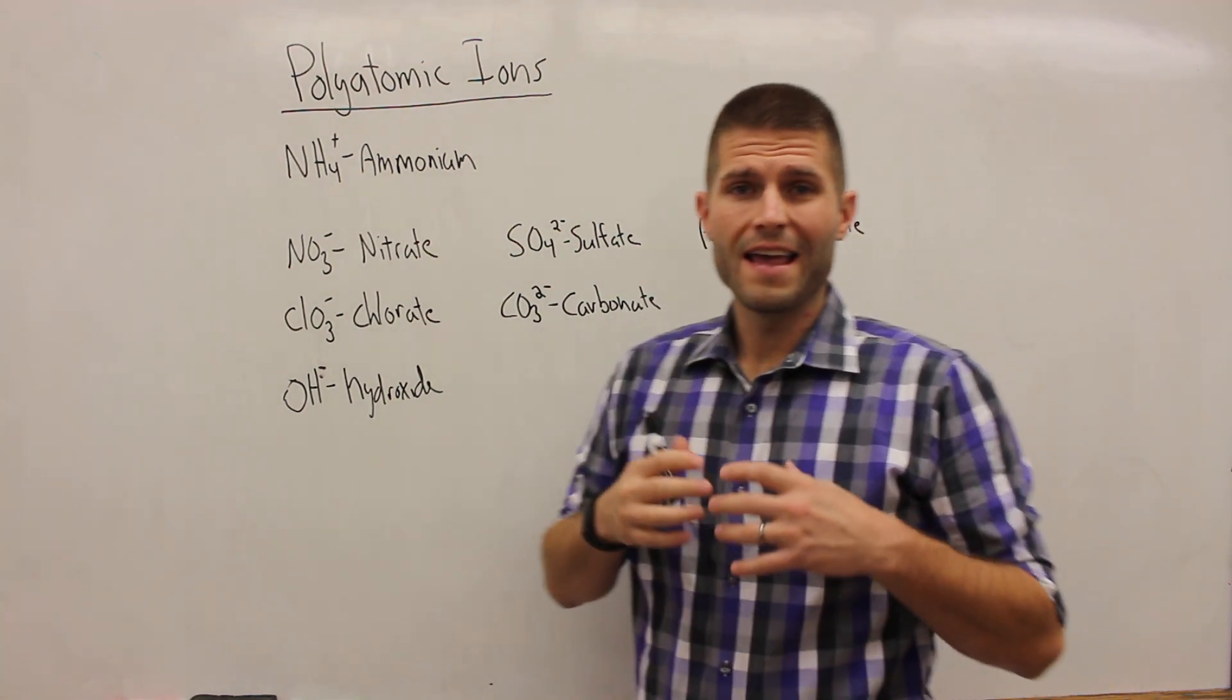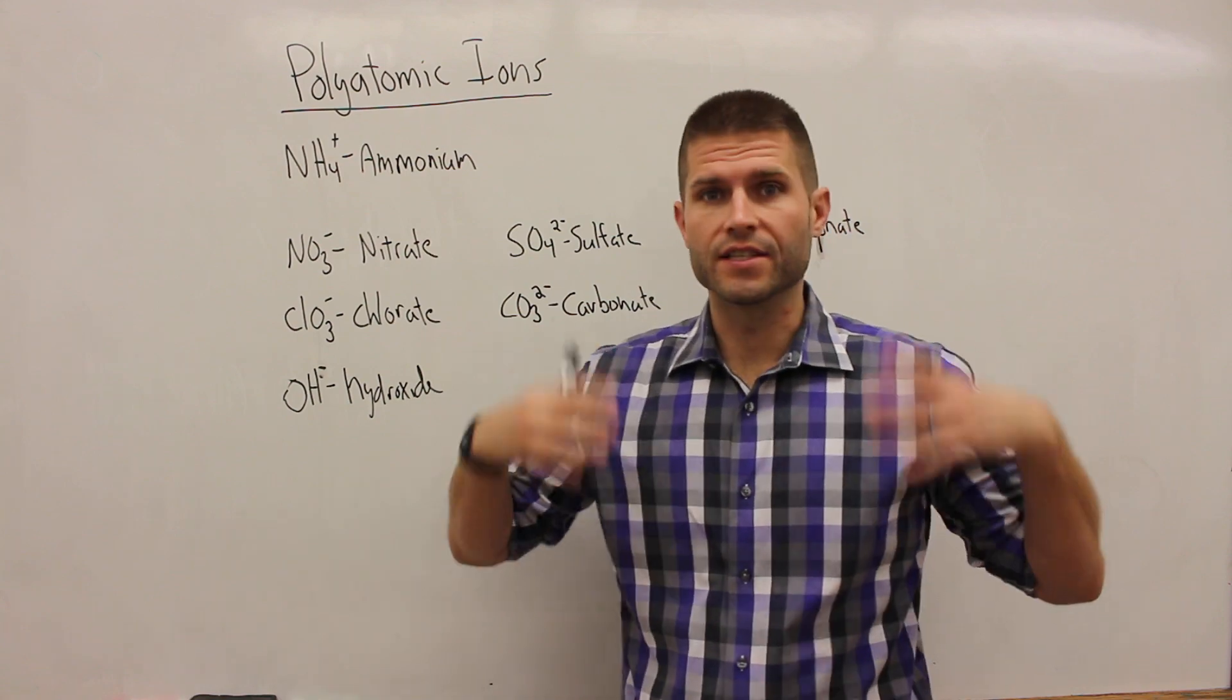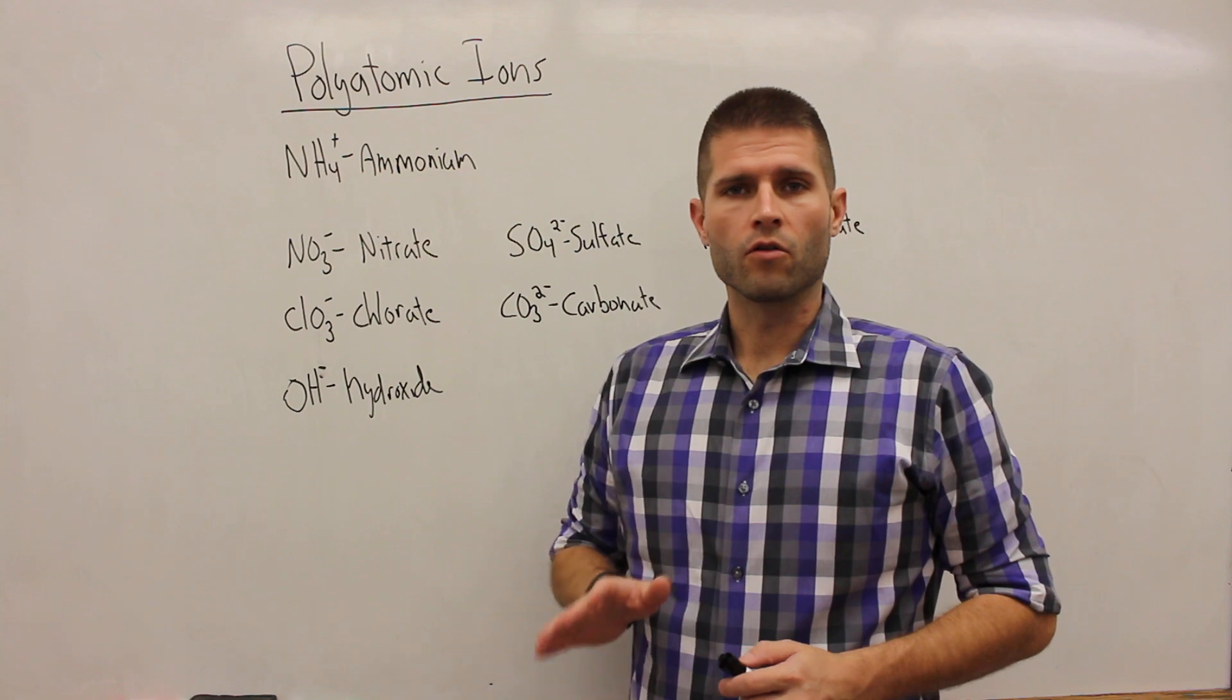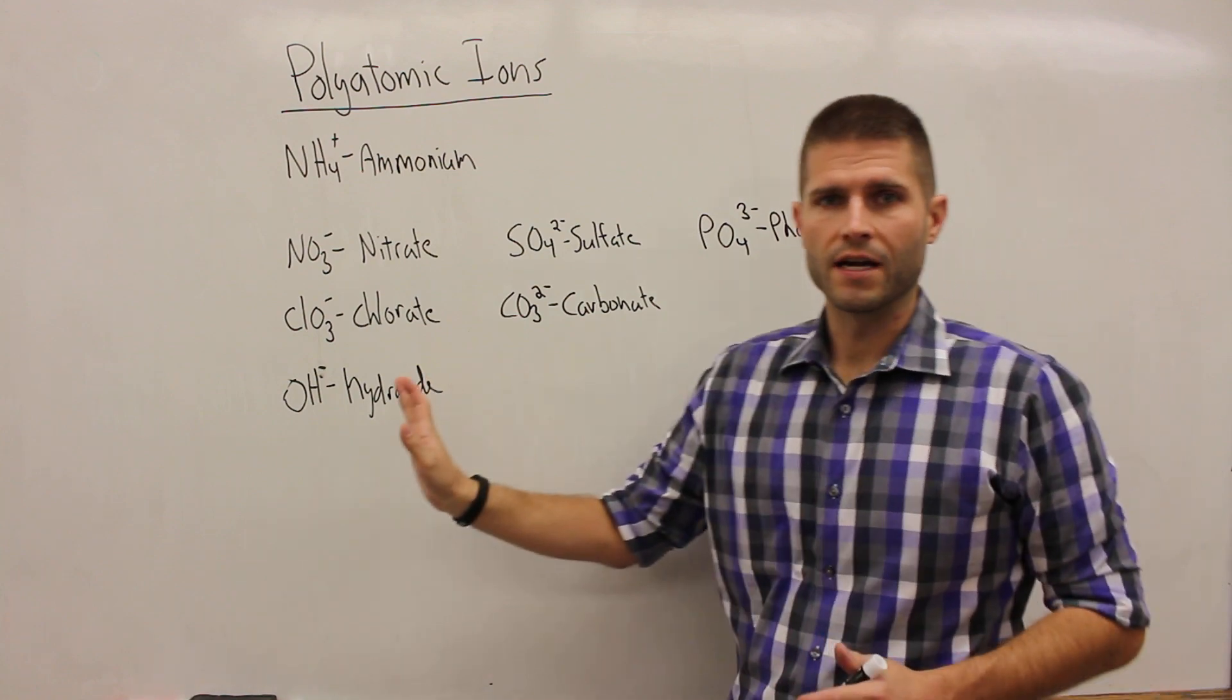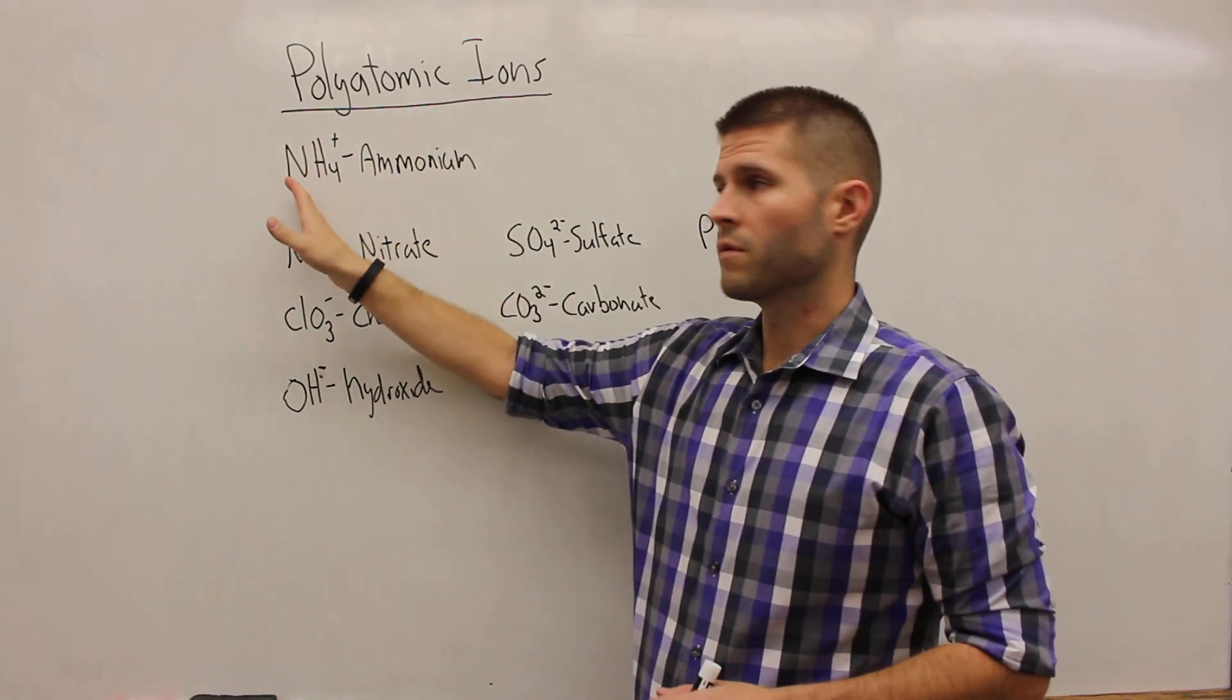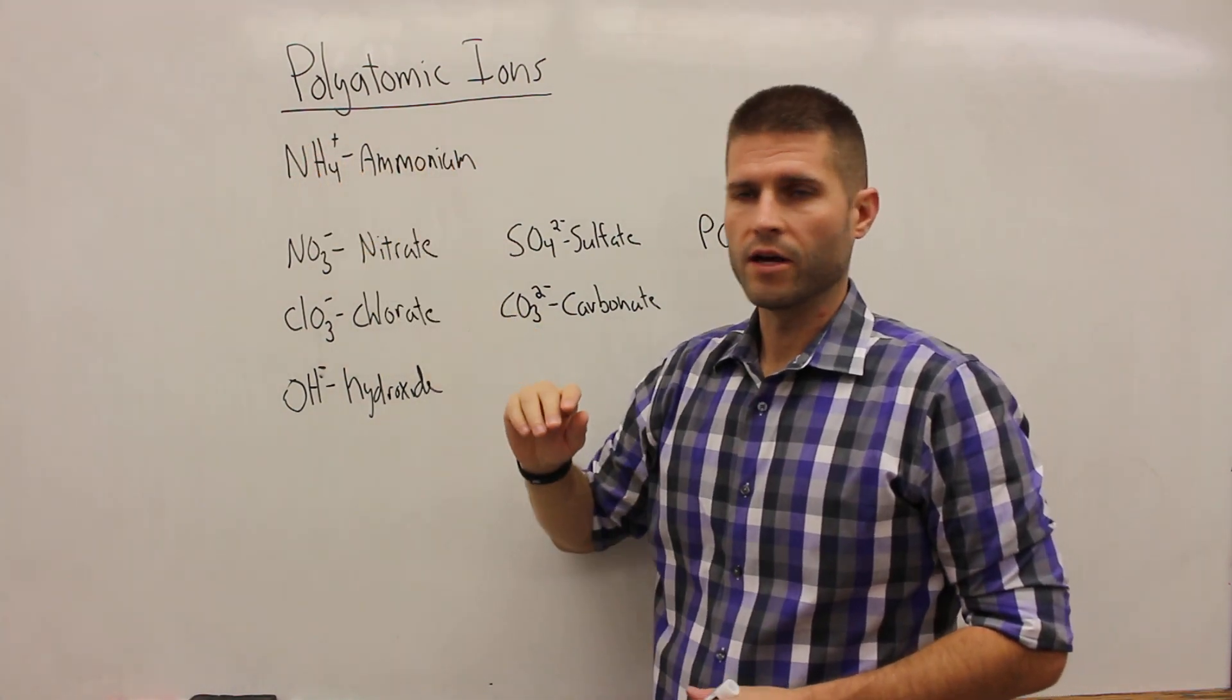Now there are a lot of different polyatomic ions that are out there, lots and lots of them, and you're not going to have to memorize all of them. You are only going to be required to memorize seven different polyatomic ions, and these are the seven that you will need to memorize. For these polyatomic ions, you'll need to know the formula with the charge, and you'll need to know the name of that polyatomic ion as well.